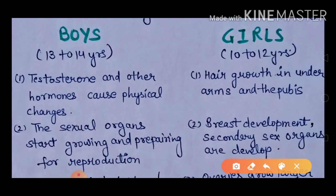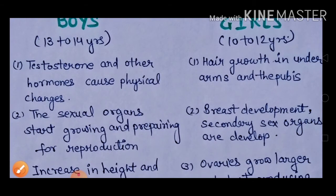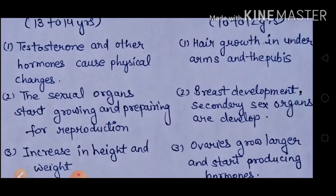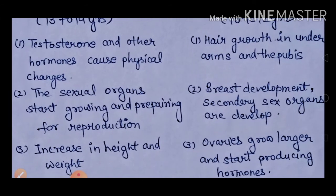The sexual organs start growing and preparing for reproduction — the secondary sexual organs start growing and preparing for reproduction. In girls, breast development occurs and secondary sexual organs are developed.